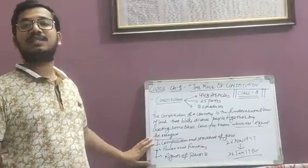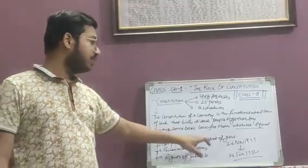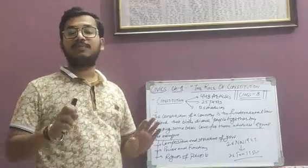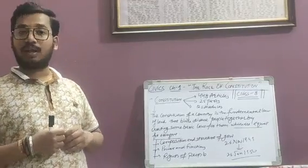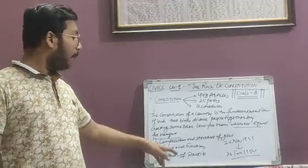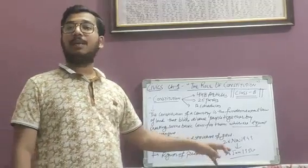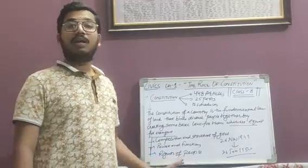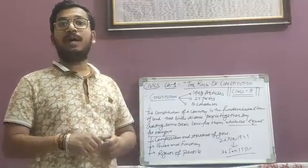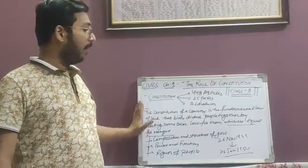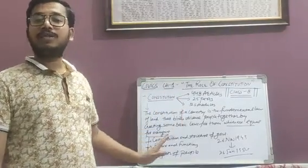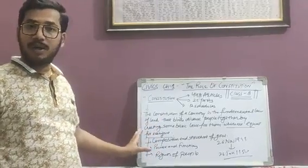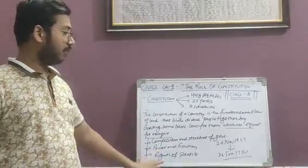The main concept of Constitution covers three areas. First, the composition and structure of government — it tells us which type of government is prevailing, whether it is a democracy, monarchy, or anarchy. Second, powers and functions — it tells us about the power and functions of the government. Third, the rights of the people — laws made to ensure equality before the law, such as the right of equality, the right of religion, and the right to constitutional remedies.